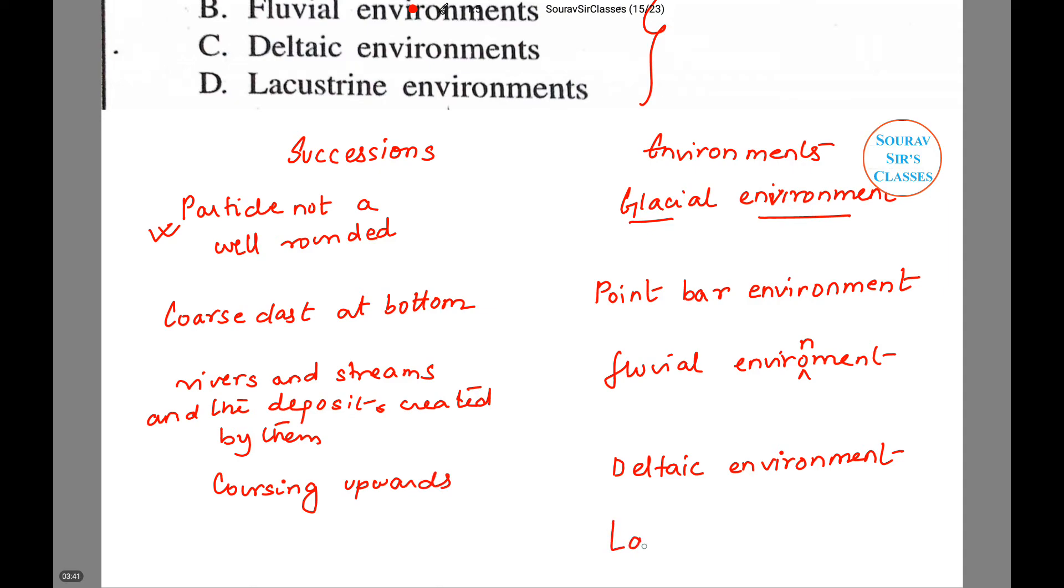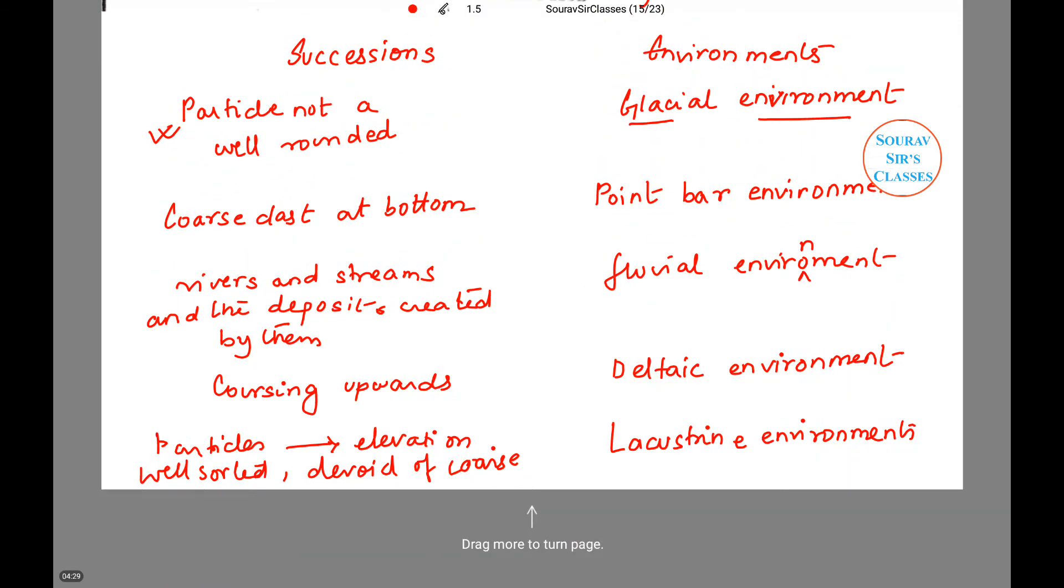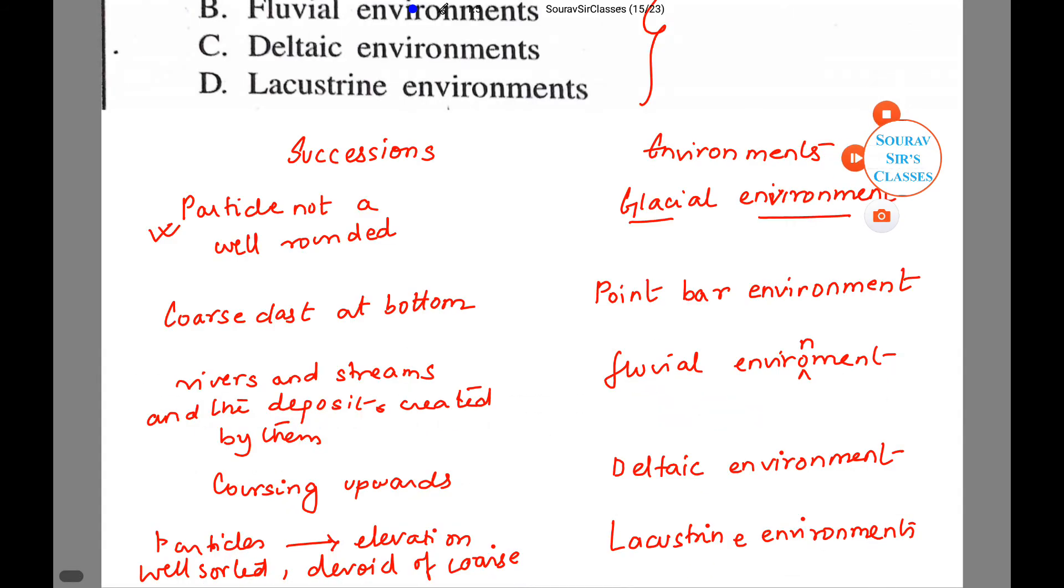And the last is lacustrine environment. And in this case we have the particles get exposed by elevation of lake beds and they are well sorted, devoid of coarse particles, and are characterized by thin layers.